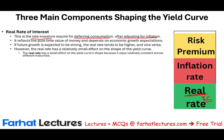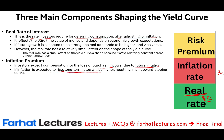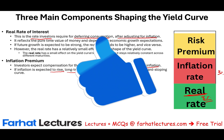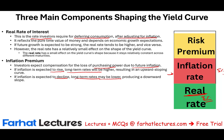The second component is inflation compensation. Investors expect compensation for the loss of purchasing power due to future inflation. If you want to earn 8% real return and expect inflation to be 3%, you demand 11%. If inflation is expected to rise, longer-term rates will be higher, resulting in an upward sloping curve. The more inflation you expect in the future, the more you require to compensate, so you don't lose purchasing power. If inflation is expected to decline, long-term rates might be lower, producing a downward slope.